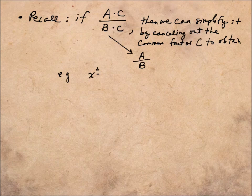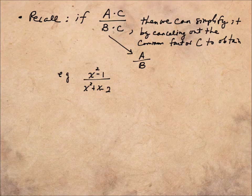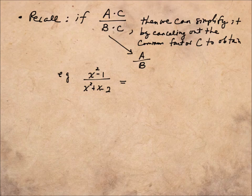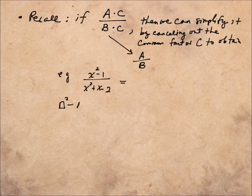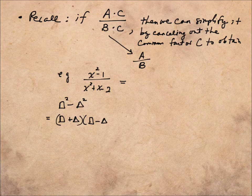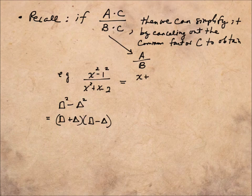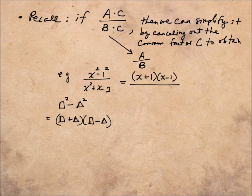For example, given x squared minus 1 divided by x squared plus x minus 2, we factor each expression. On top, we use the difference of two squares rule: x squared minus 1 squared factors as x plus 1 times x minus 1, since we have the first plus the second times the first minus the second.